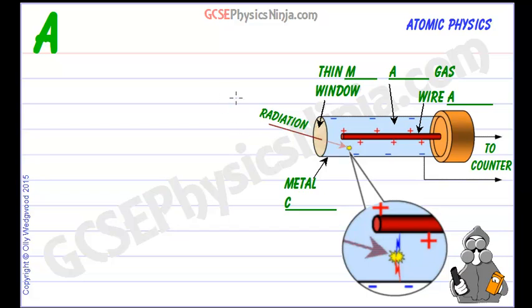So first of all any alpha, beta or gamma radiation can enter through a window, a very thin window made of a substance called mica.